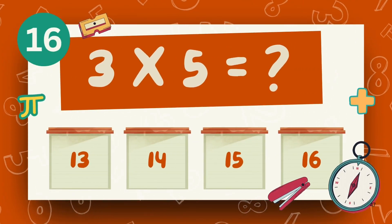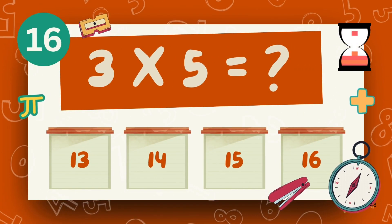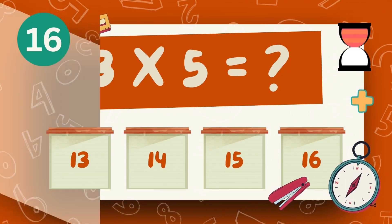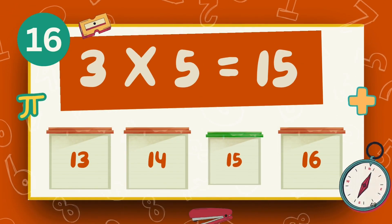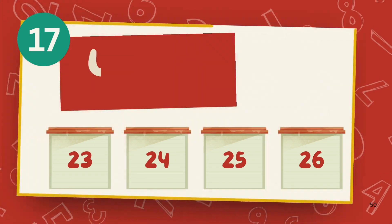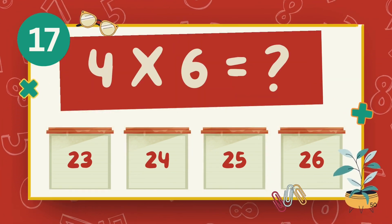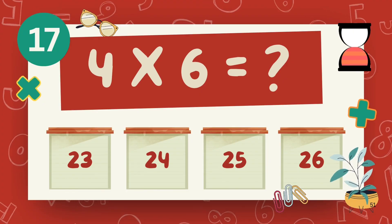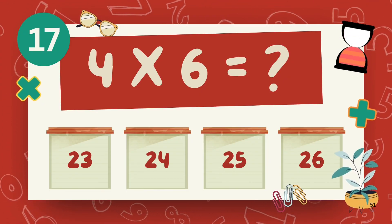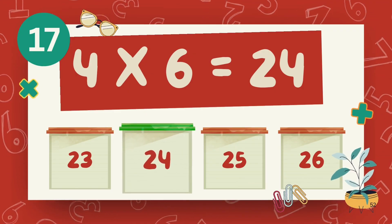What is 3 multiply 5? The answer is 15. What is 4 multiply 6? The answer is 24.